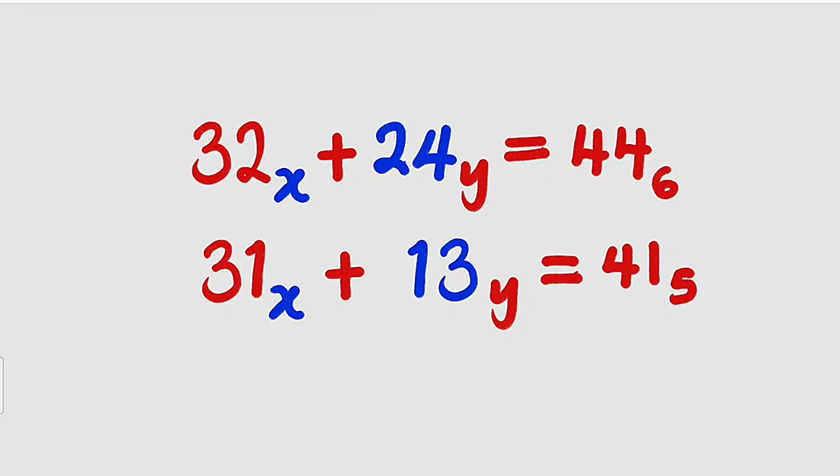Hello, good dear viewers. In this tutorial, we are going to find a solution to this system of number base equations. We are given two equations here to solve simultaneously. 32 to base x plus 24 to base y equals 44 to base 6. And the second equation is 31 to base x plus 13 to base y equals 41 to base 5.